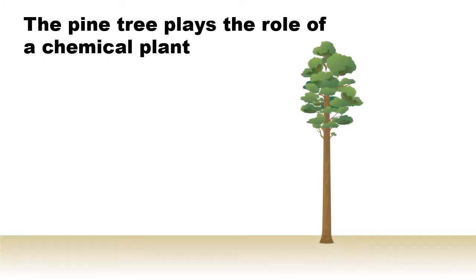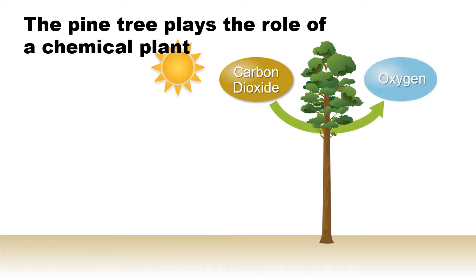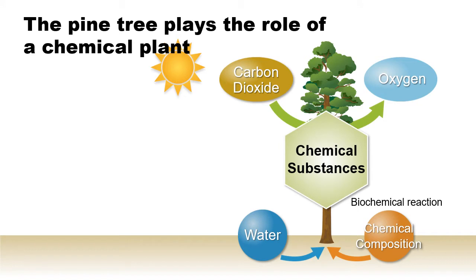The pine tree, like other trees, performs photosynthesis — a process by which solar energy transforms carbon dioxide and water into the oxygen that humans and other life depend on for survival. At the same time, pine trees absorb water and nutrients through their roots, subsequently growing and synthesizing cellulose, a fiber material, and other chemical substances.